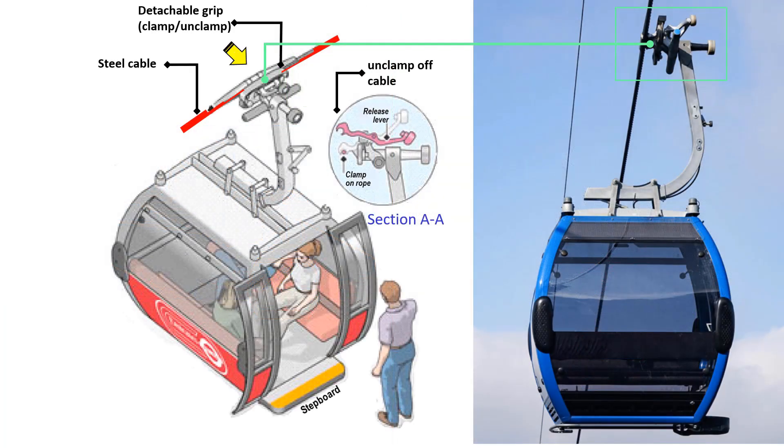This is a diagram of the grip assembly and its corresponding photo. Its grip clamps the cable and carries the cabin below during travel between stations. This inset shows how the release lever clamps or unclamps on the cable. When the release lever goes up, it detaches or unclamps from the cable. When it goes down, it attaches or clamps to the cable.